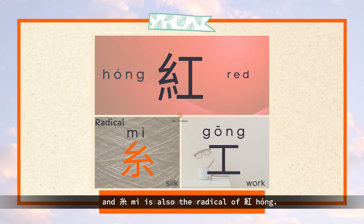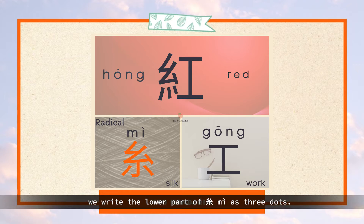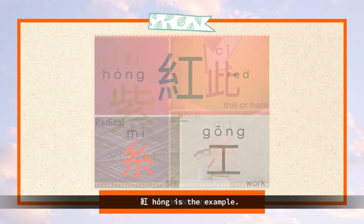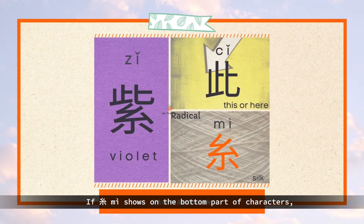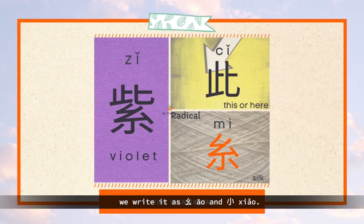We learned mi in our previous videos. Mi is also the radical of hong. When mi shows on the left part of characters, we write the lower part of mi as three dots — hong is the example. If mi shows on the bottom part of characters, such as zi, we write it as ao and xiao.